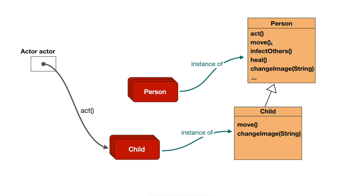It is important to understand that every method call, even internal method calls to a method that is not private, is always dynamically dispatched — meaning we always go via the current object reference. So when we have the move call inside the Act method, it is essentially a this.move() call. When this Act method calls the Move method, it actually goes to the current object, follows the instance-of reference again, and looks for the Move method. So when the current object is a Child object, the Child's overridden Move method gets executed, even though the call comes from the Act method in Person.